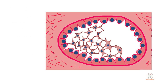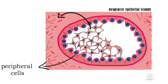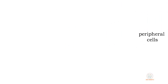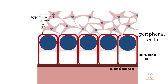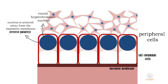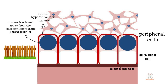In high power magnification, the epithelial islands are composed of two types of cells: peripheral cells and central cells. The peripheral cells are tall columnar with round hyperchromatic nuclei. The nuclei are located away from the base membrane — referred to as reversed polarity — giving them a palisaded pattern.